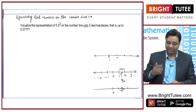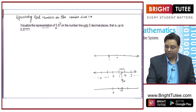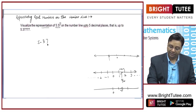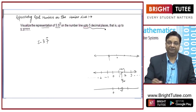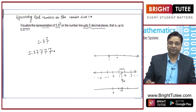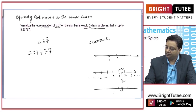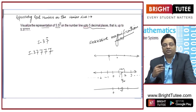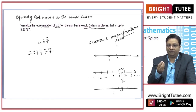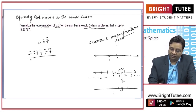We will talk about those numbers and how to represent them on the real number line. Our first example: visualize the representation of 5.37 bar on the number line up to 5 decimal places — that is, 5.37777. We will use successive magnification. It is like using a magnifying glass to look between numbers on the number line, allowing you to see very small values between two points.